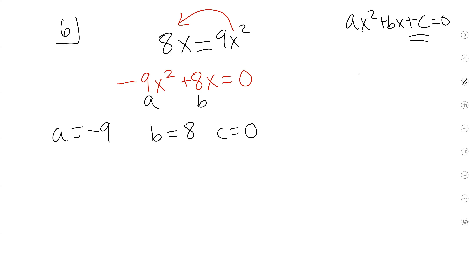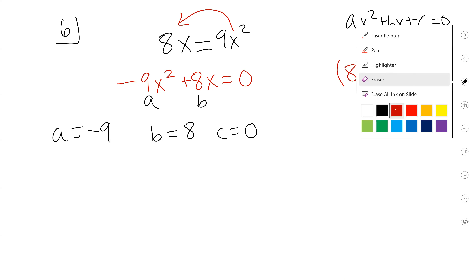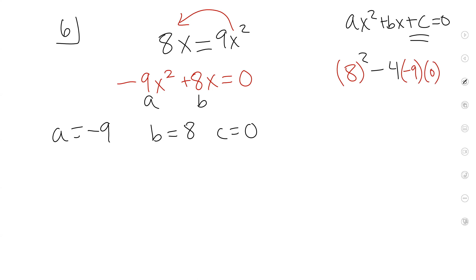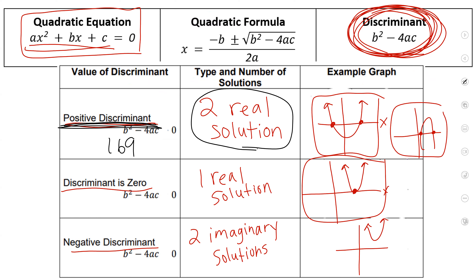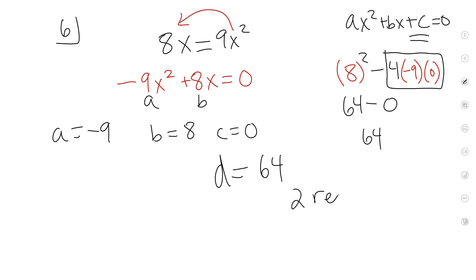So b² minus 4ac. The b value is 8, a is negative 9, c is 0. What's 8 squared? 64. Minus — let's see what this box is equal to: 4 times negative 9 times 0 is 0. And 64 minus 0 is 64. So my discriminant is 64 — that's a positive number. So we have two real solutions, and the graph will cross the x-axis twice.